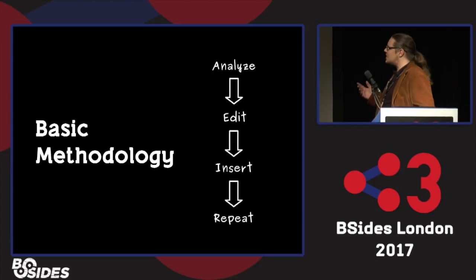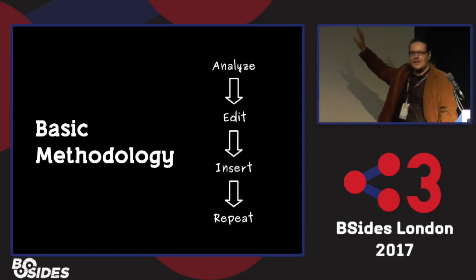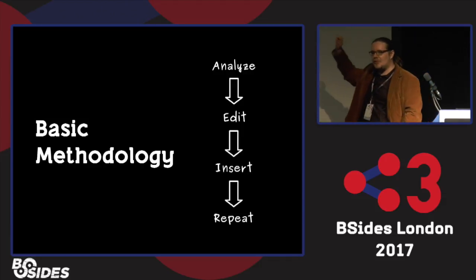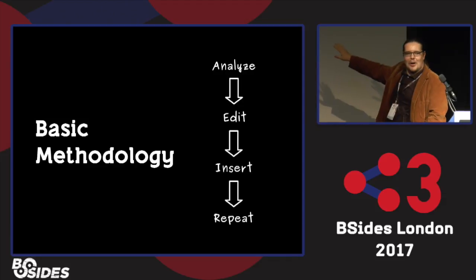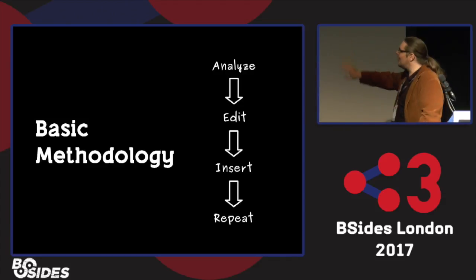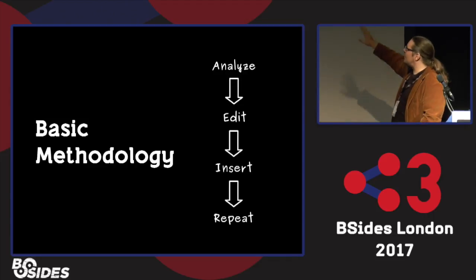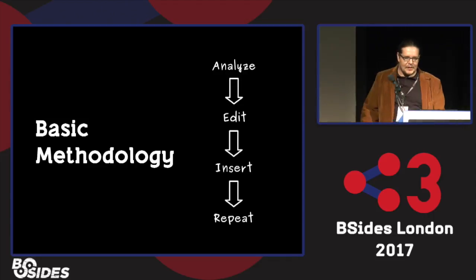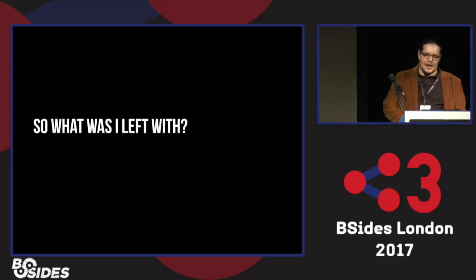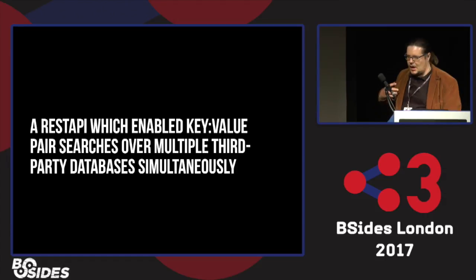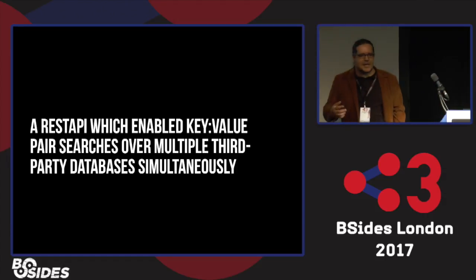We had this basic methodology where we would take third-party data dumps, analyze them, edit them, turn them into JSON documents, insert them, and then realize we'd screwed up with some key-value field problems and start again — a kind of repeat, rinse, repeat mentality. But what we were left with was something pretty cool: a REST API key-value pair search over multiple databases simultaneously.